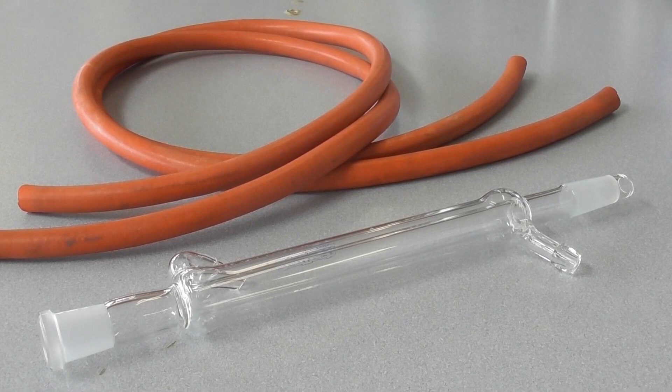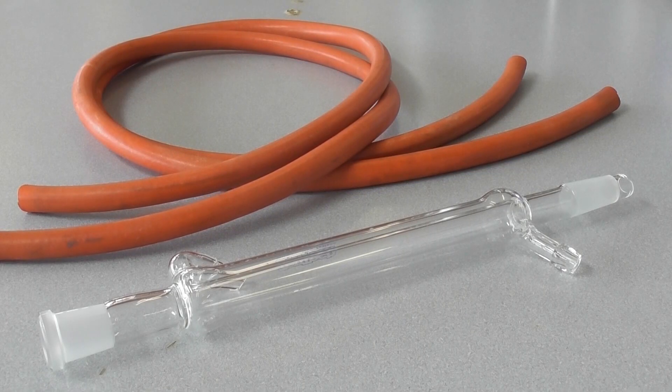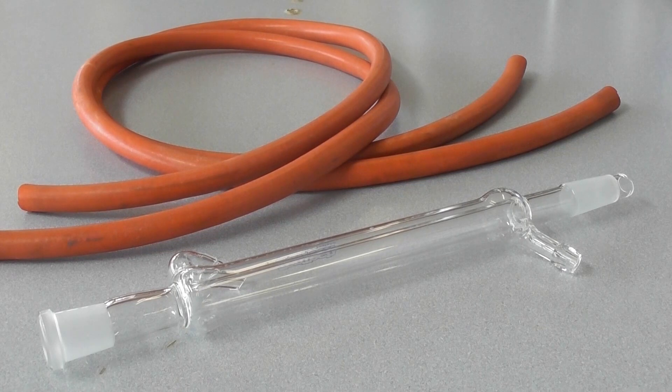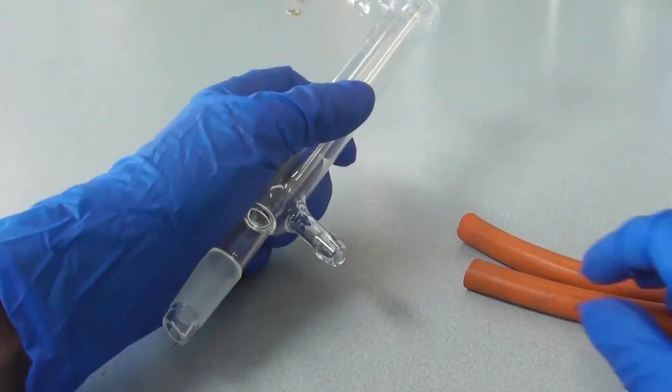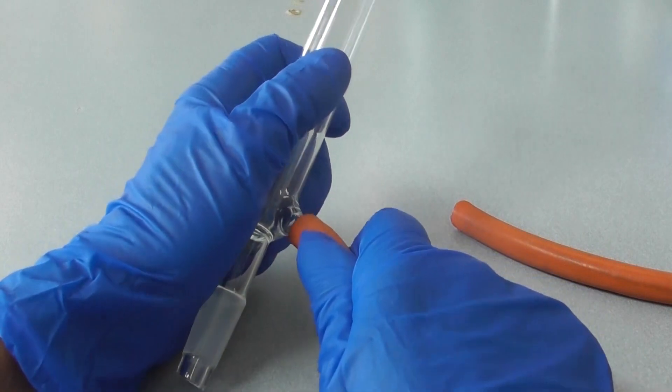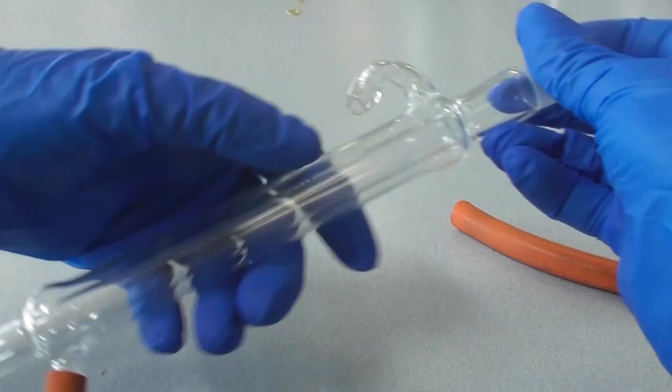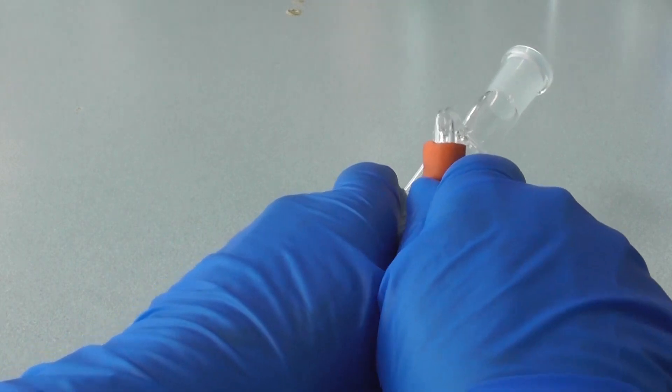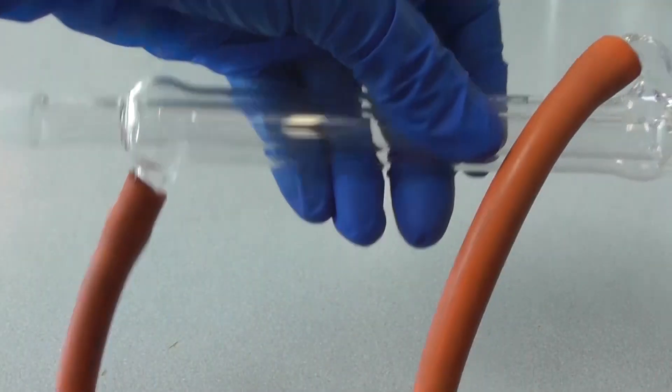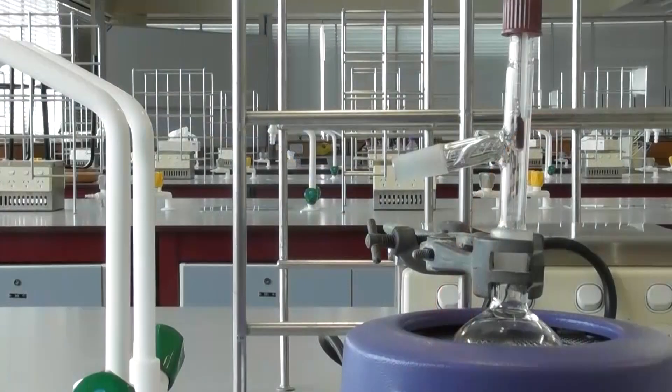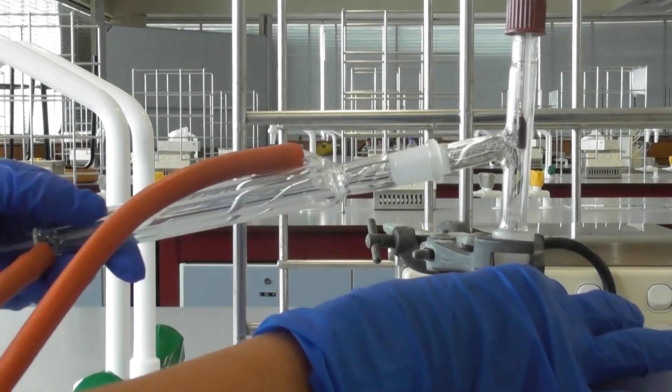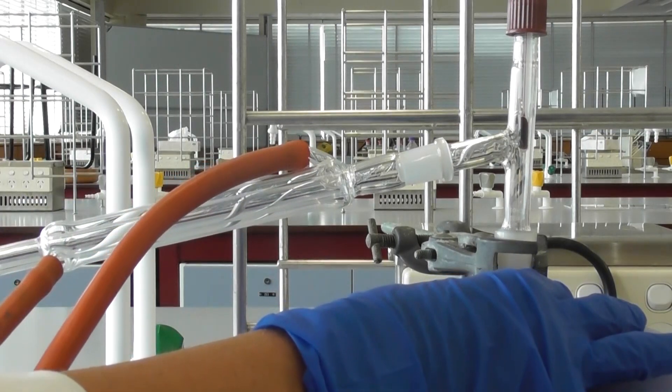The next piece of equipment is the condenser. This uses water to cool the vapors, condensing them back into a liquid which can then be collected. Firmly attach a piece of rubber hose to one of the short tubes on the side of the condenser. Then attach a separate piece of rubber hose to the other short tube. Fit the opening of the condenser to the branch of the still head, ensuring that the glass joints overlap completely.